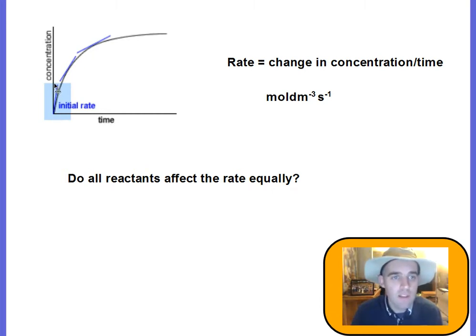Here, this is the initial rate. At t equals zero, we've got a gradient, and that gives us the initial rate of reaction. As the reaction goes on, the concentration of the reactants change, so it's difficult to know what effect they have.